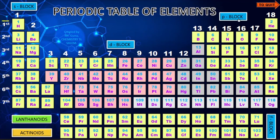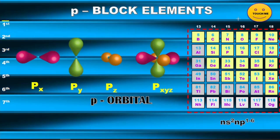If you are interested in P block elements, click that button and it takes you to a page showing the P orbital's different orientations and a group-wise element listing: groups 13, 14, 15, 16, 17, and 18. The general electronic configuration of P block elements is also given. Click the smiley to return to the main periodic table.